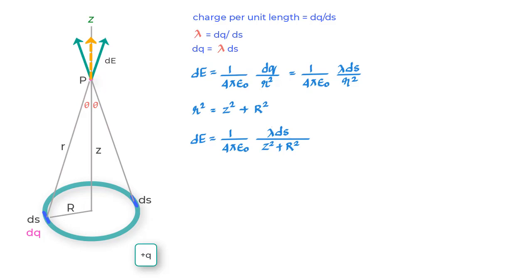Now the question is how can we add up all the vertical components of the electric field by each element DS on this ring. What we will see is that integral calculus can help us in doing this summation.